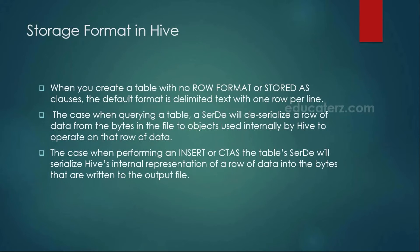First of all, that data has to pass over the network. If you want to pass it over the network, that row of data has to be converted into bytes. This process of converting the row of data into bytes we call serialization. And deserialization means especially if you are querying any table using a SELECT statement, the deserializer will be used. The deserializer takes a row of data from bytes and converts it into objects. This process we call deserialization.